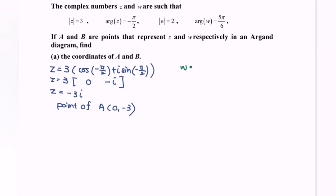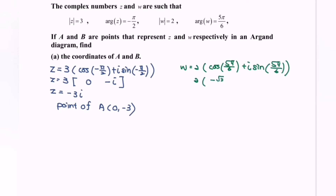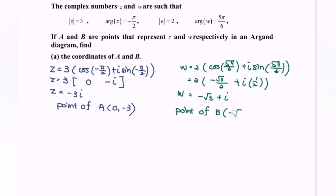Next, the polar form for w is 2 multiplied by cos(5 pi over 6) plus i sin(5 pi over 6). Since cos(5 pi over 6) equals cos(150°) which is negative root 3 over 2, and sin(5 pi over 6) equals 1 over 2, expanding gives w equal to negative root 3 plus i in Cartesian form. So the coordinates of B are (negative root 3, 1).